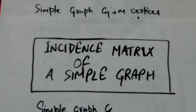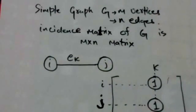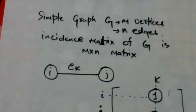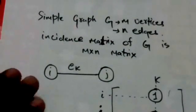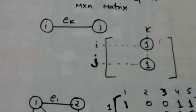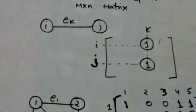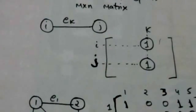Hello friends, welcome back. In this tutorial we will study about the incidence matrix of a simple graph. The incidence matrix of a simple graph G having M vertices and N edges is an M cross N matrix. If in graph G there is an edge Ek that joins vertex I and vertex J, then in the incidence matrix the entry at the ith row and kth column and the entry at the jth row and kth column are both one, and all other entries in column K are zero.